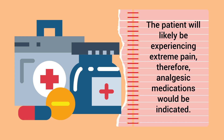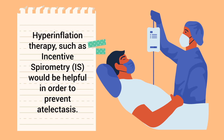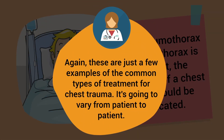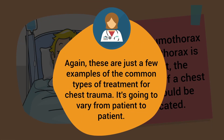The patient will likely be experiencing extreme levels of pain, therefore analgesic medications would be indicated. Hyperinflation therapies such as incentive spirometry would be helpful in order to prevent atelectasis. And if a pneumothorax or hemothorax is present, the insertion of a chest tube would be indicated. These are just a few examples of the common types of treatment for chest trauma.